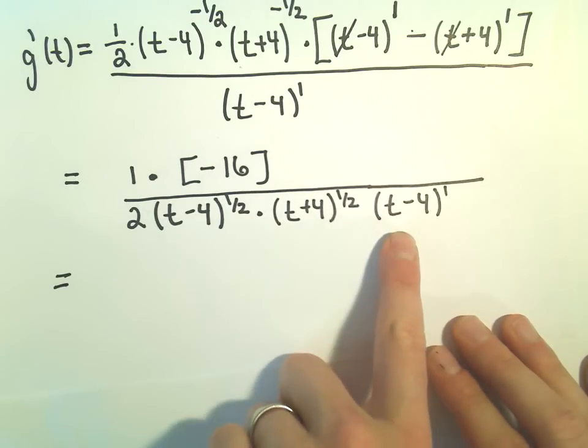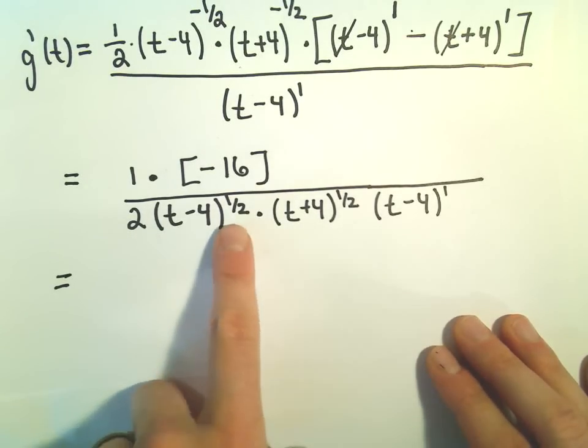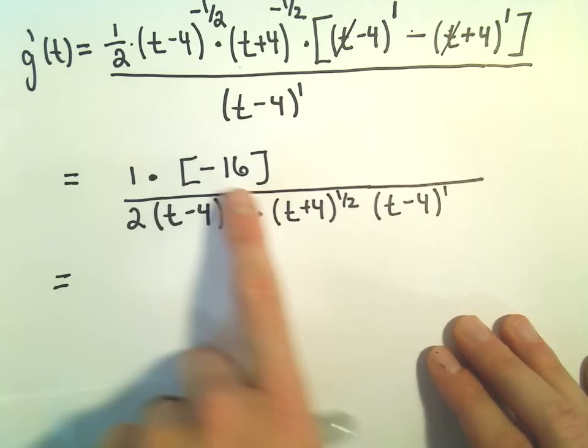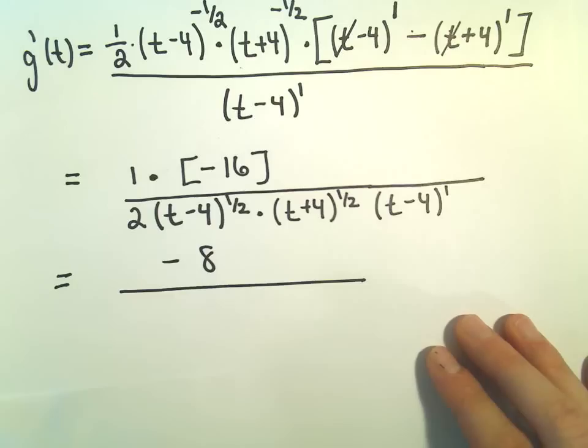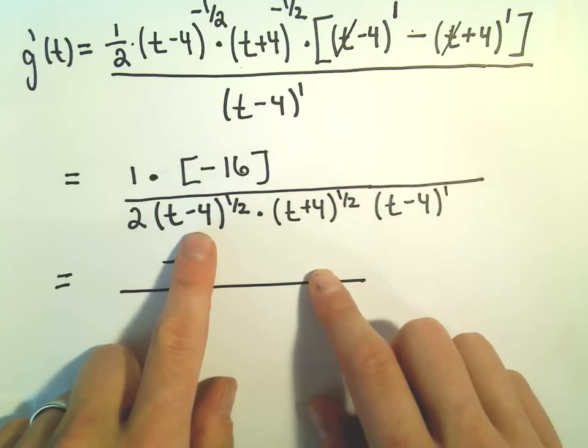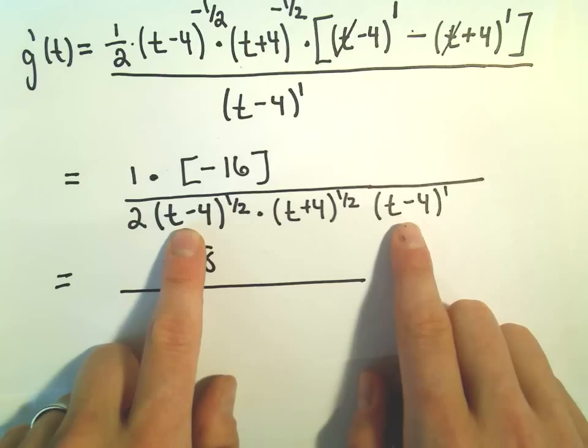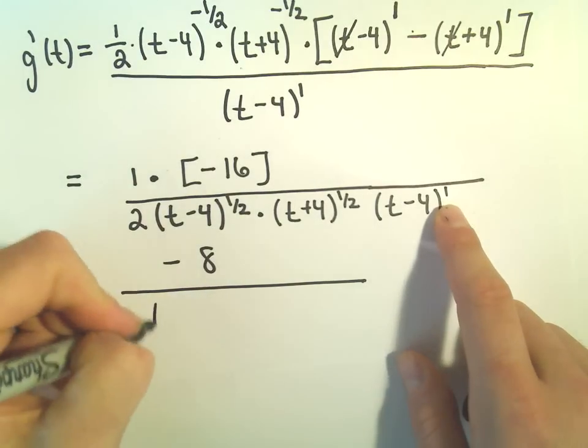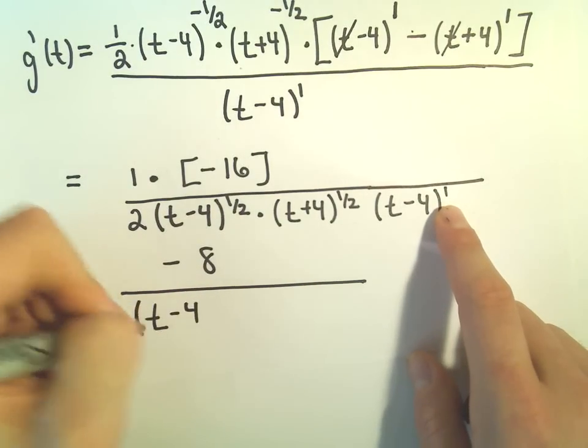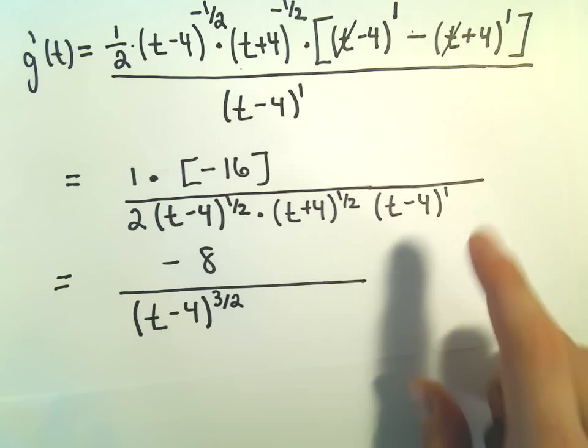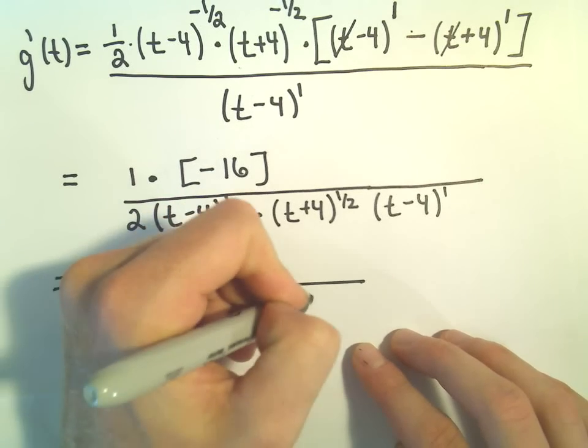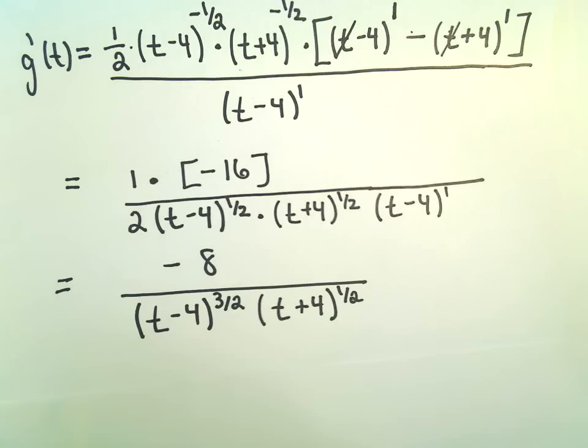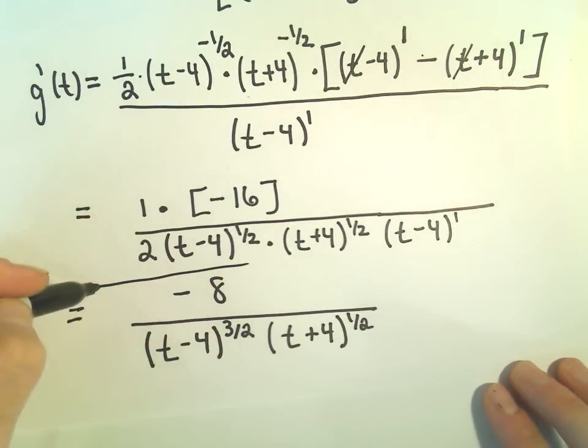Notice everything in the denominator is being multiplied. 2 times the t minus 4 to the half, t plus 4 to the half, t minus 4 to the first. So we've got negative 16 over 2, which we can make negative 8. And then I'm going to collect my like terms. We've got a t minus 4 to the 1 half times a t minus 4 to the first. We have like bases, we can add the exponents so we can make that t minus 4 to the 3 over 2 power. And then the t plus 4 to the 1 half is still just left over. And I think I would probably stop right there and say that's my derivative.